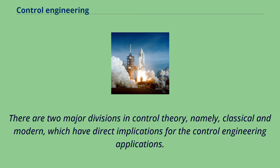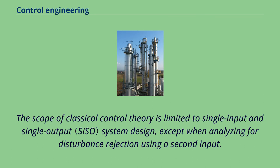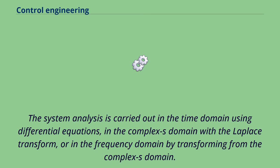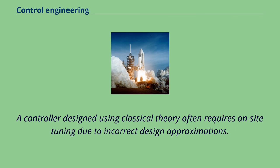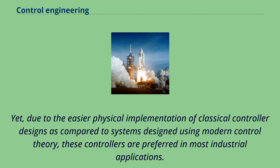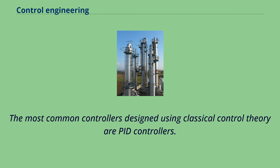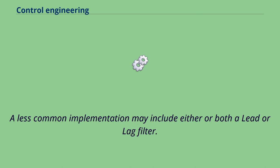There are two major divisions in control theory: classical and modern, which have direct implications for control engineering applications. The scope of classical control theory is limited to single-input and single-output system design, except when analyzing for disturbance rejection using a second input. System analysis is carried out in the time domain using differential equations, in the complex S domain with the Laplace transform, or in the frequency domain. A controller designed using classical theory often requires on-site tuning due to incorrect design approximations. Yet, due to easier physical implementation compared to modern control theory, these controllers are preferred in most industrial applications. The most common controllers designed using classical control theory are PID controllers, and a less common implementation may include a lead or lag filter.